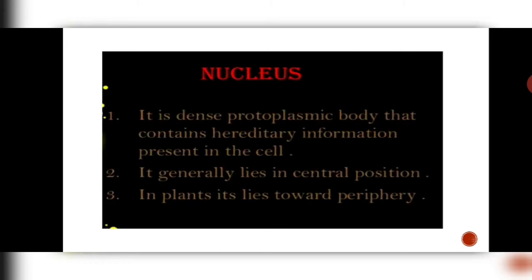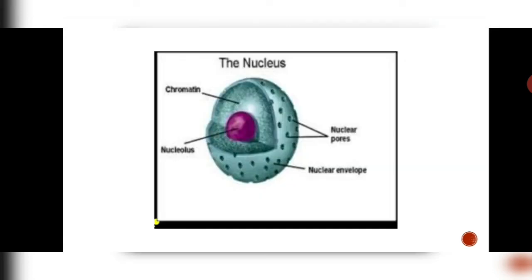The next structure is the nucleus — the brain of the cell. It is going to govern what kind of characters will be given from this cell to its progeny or its future generations. It has dense protoplasmic fluid inside it and it has all the hereditary information in the form of chromatin material. In animals, it has a central position, whereas in plants it lies towards the periphery. There are certain hole-like structures called nucleopores. There is a nuclear envelope — any double membranous structure is known as nuclear envelope. Inside are chromatin, which is the genetic material, and nucleolus, which is the site for synthesis of ribosomes.